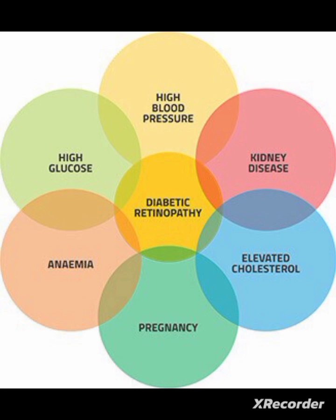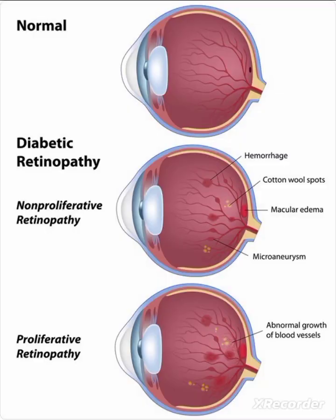The most common cause of diabetic retinopathy is persistent hyperglycemia. There are two types of diabetic retinopathy: the first is non-proliferative retinopathy, and the second is proliferative retinopathy.